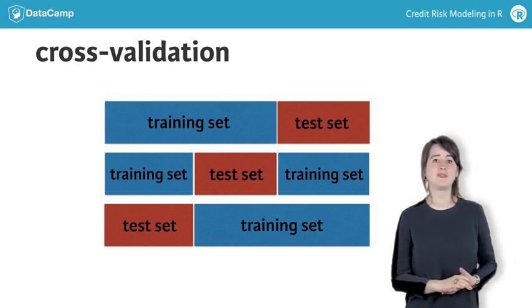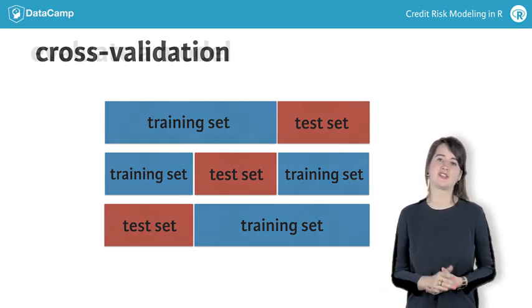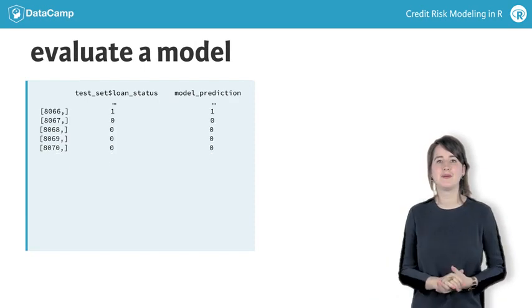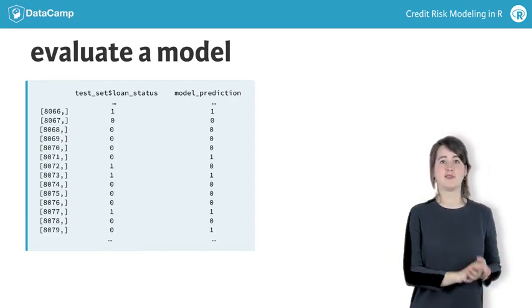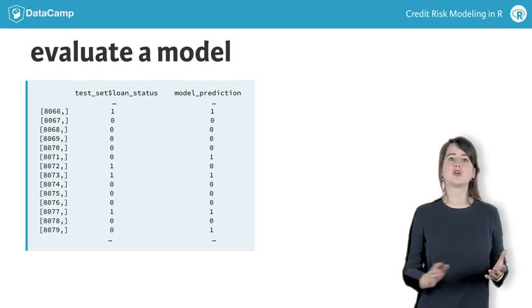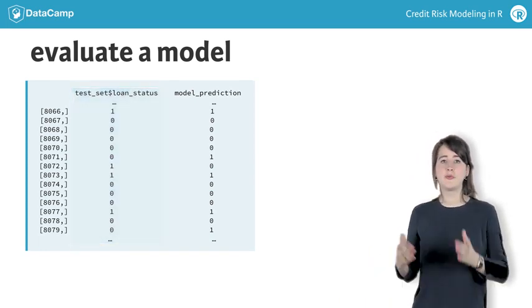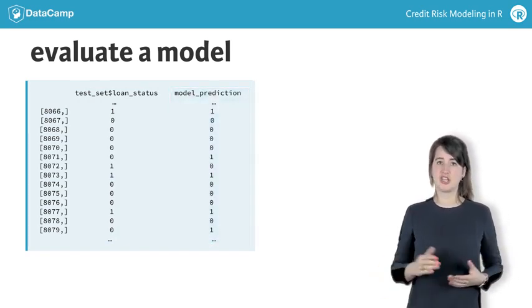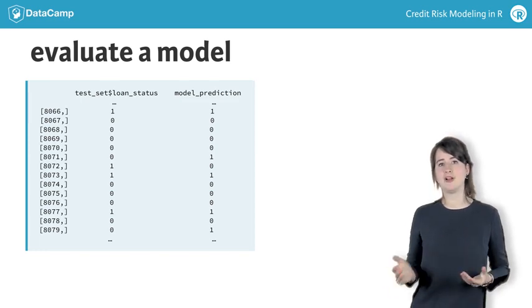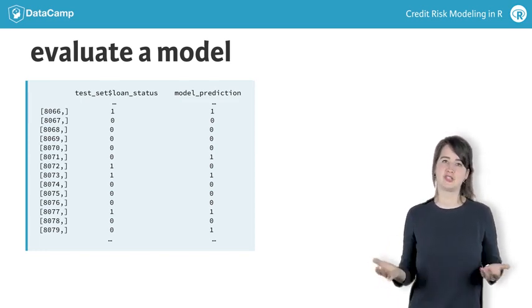Imagine we have just run a model and now we apply the model to our test set to see how good the results are. Evaluating the model for credit risk means comparing the observed outcomes of default versus non-default, stored in the loan status variable of the test set, with the predicted outcomes according to the model. If we are dealing with a large number of predictions, a popular method for summarizing the result uses something called a confusion matrix.